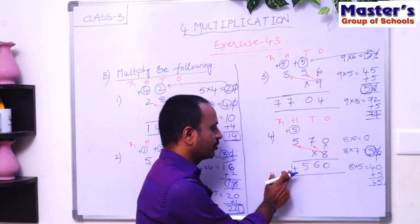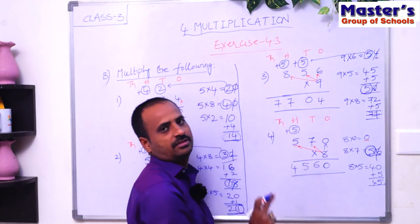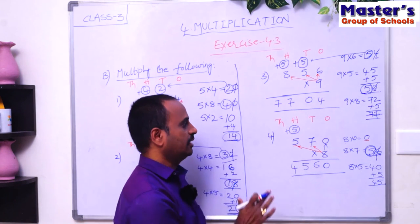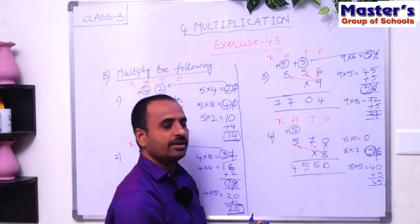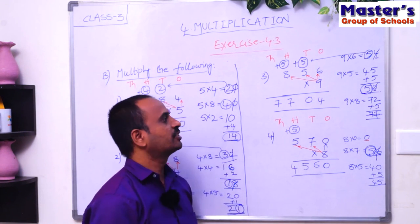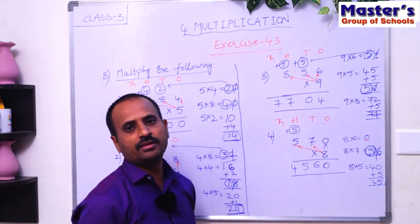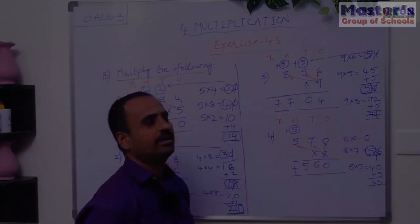The answer is 4560. In this way, we do multiplication with regrouping — that is, with carrying. Thank you.